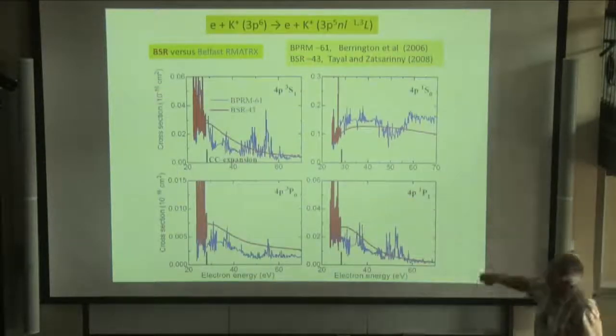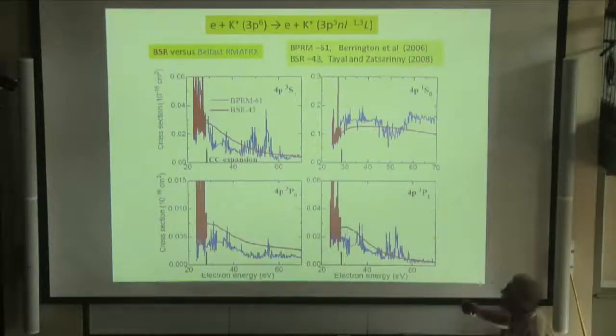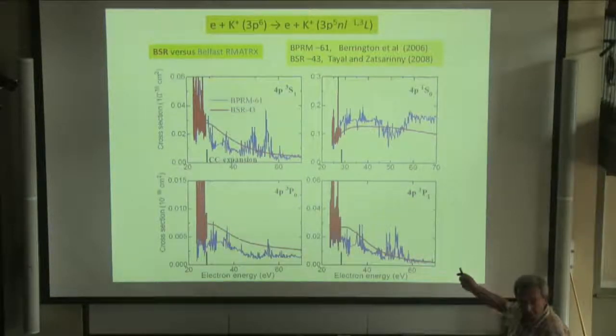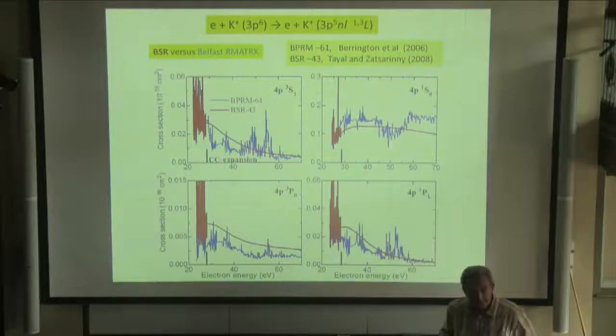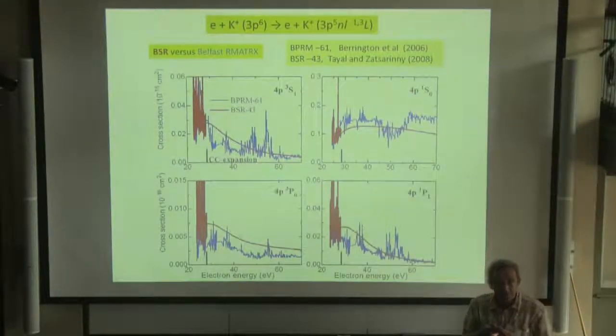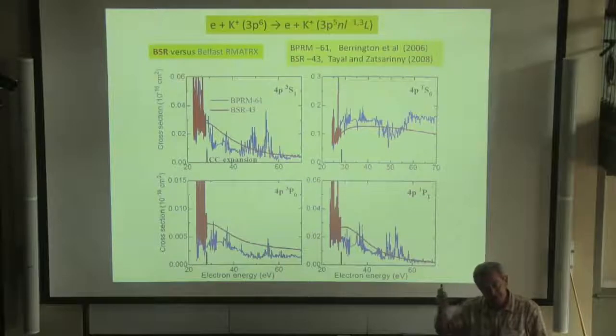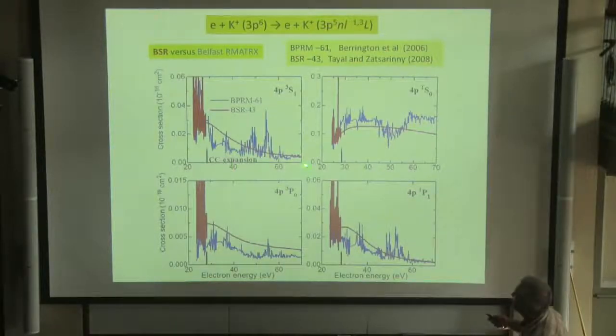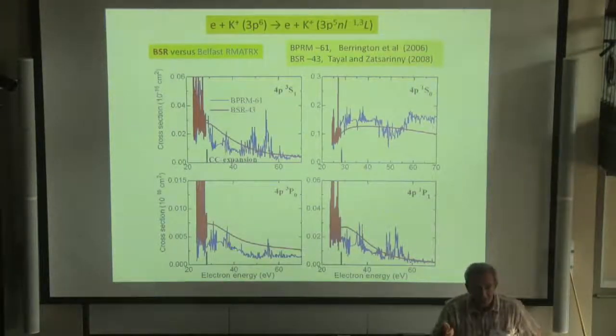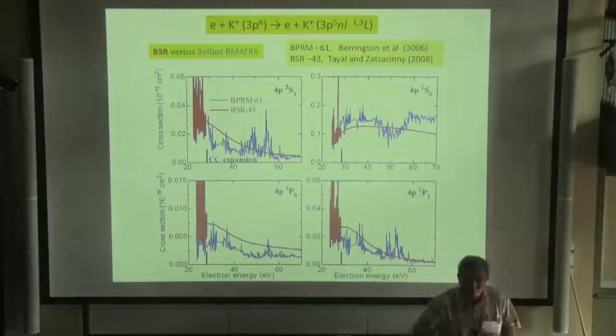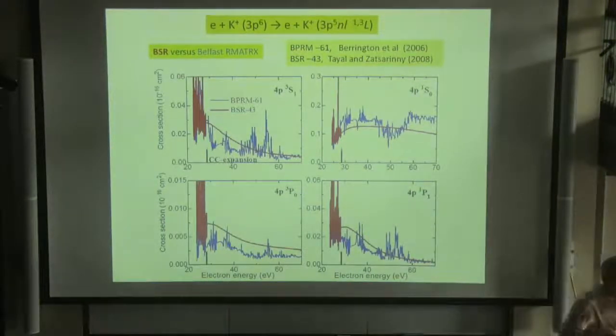For example, consider the scattering on potassium plus. Here, two calculations: from standard RMATRX work and our calculation. You will see that this RMATRX calculation provides too many states, mainly due to the way they used too many pseudo-orbitals to describe the correlation in the target states, whereas our result is rather smooth. In principle, if we're interested in the rate coefficient, many states is not so dangerous, but clearly it provides a source of uncertainty for the final states.